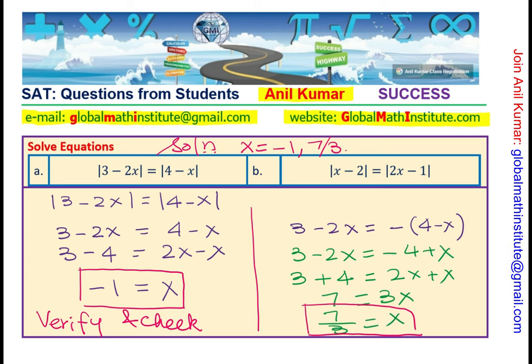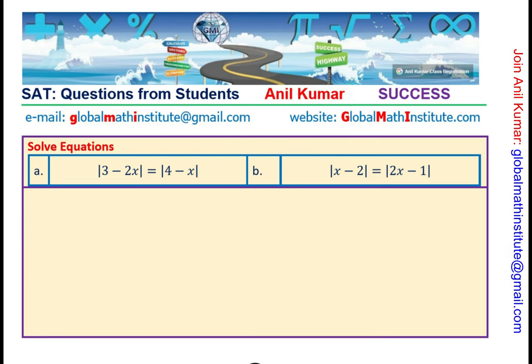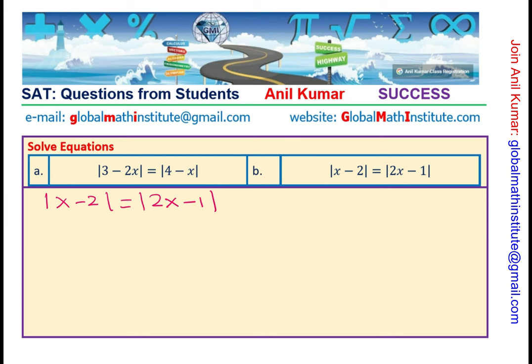Now, once you have done this, try the next one which is absolute value of x minus 2 equals to absolute value of 2x minus 1. Pause the video, try and then check with my solution. Once you get the solution, it is very important to check your answer also.